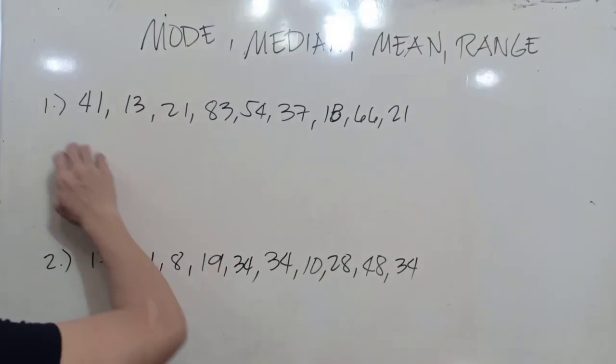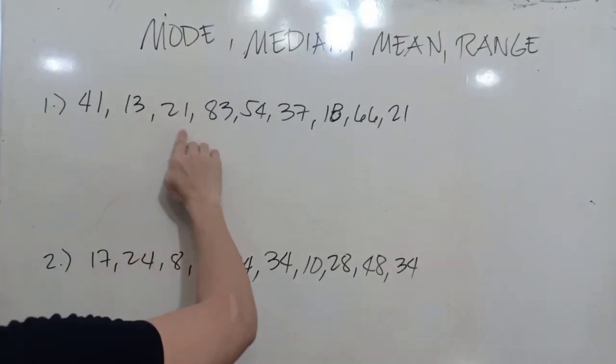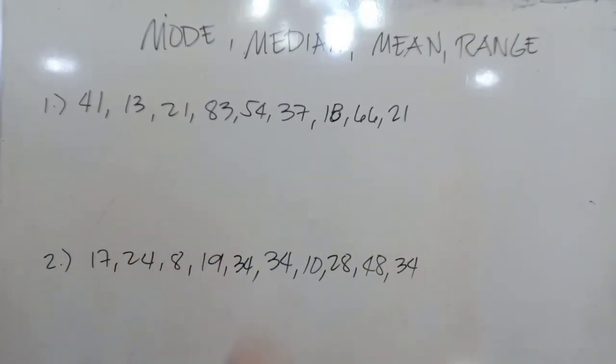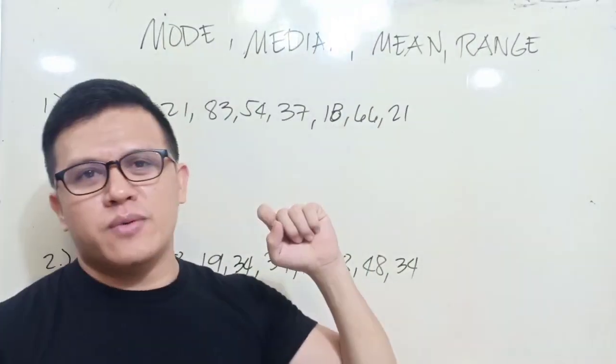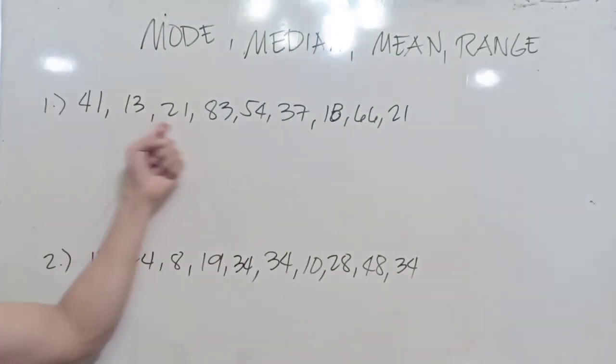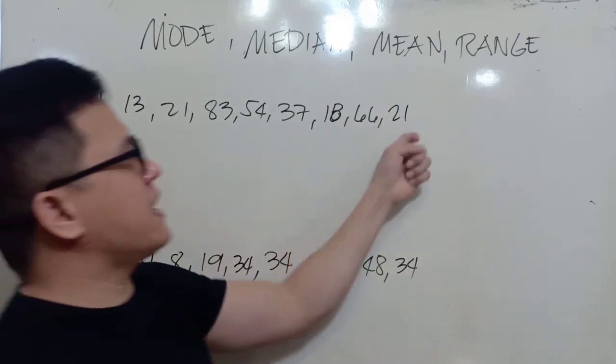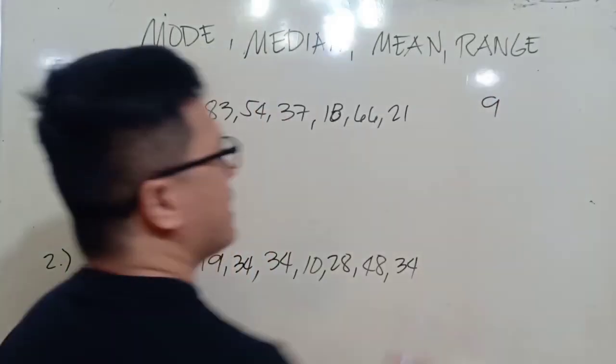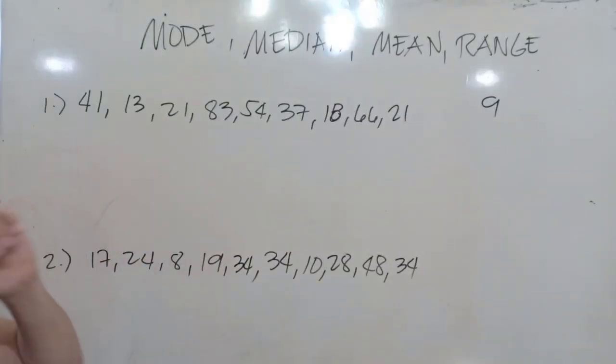Let's start here. We have here number one: 41, 13, 21, 83, 54, 37, 18, 66, and 21. So how many are they? 1, 2, 3, 4, 5, 6, 7, 8, 9. So there are nine data here.